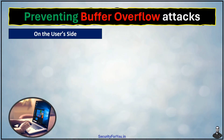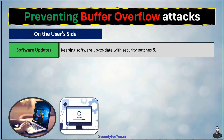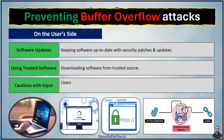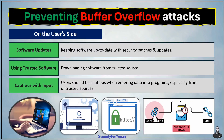On the user side: keep software up to date with security patches, which are like installing a stronger box lid to prevent overflowing. Use trusted software — downloading from trusted sources reduces the risk of encountering known buffer overflow vulnerabilities. Be cautious with user input — users should be careful while entering data into programs, especially from untrusted sources, and avoid opening suspicious attachments or clicking on unknown links. By implementing these preventive measures on both the programmer and user sides, we can significantly reduce the risk of buffer overflow attacks and make our systems more secure.